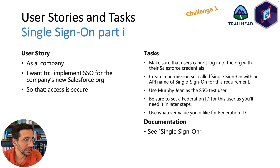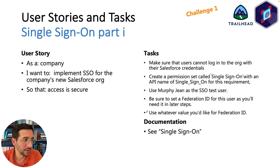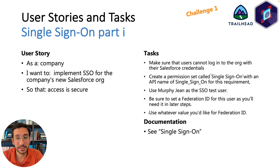Use Murphy Gene as the SSO test user. Be sure to set the Federation ID for this user, as you'll need it in later steps, so keep a note with all that information in one place. You can use whatever value you'd like for the Federation ID. Once you've done these two things, you are good to pass Challenge One.